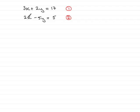So what we do is find a number that 3 and 2, in this case, go into. And preferably it's the lowest common multiple of 3 and 2 — the lowest number that 3 and 2 go into — and that would be 6.